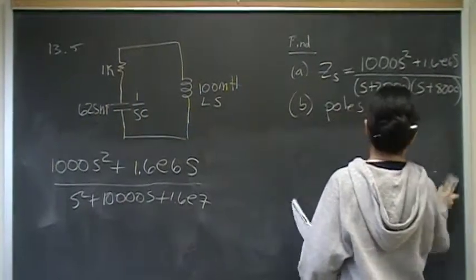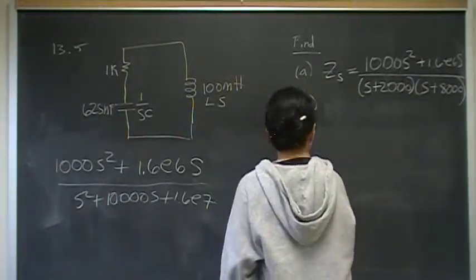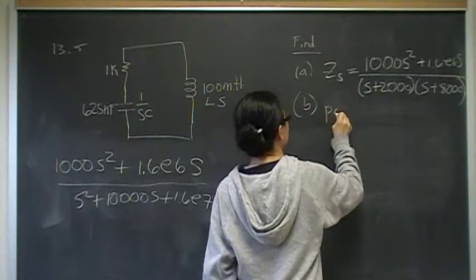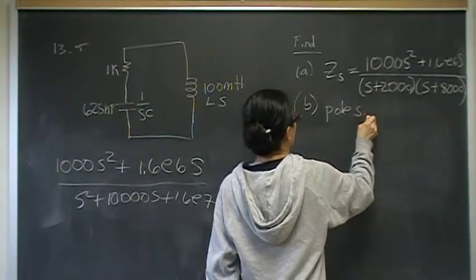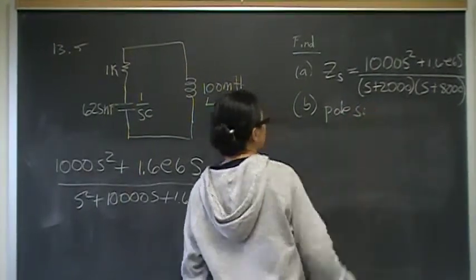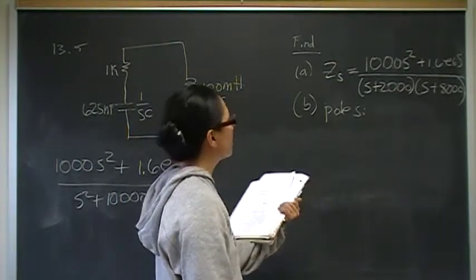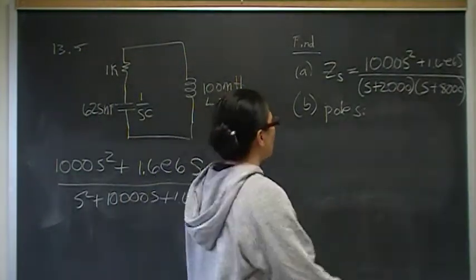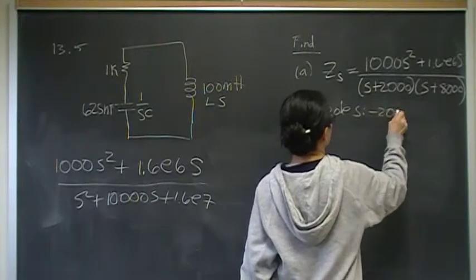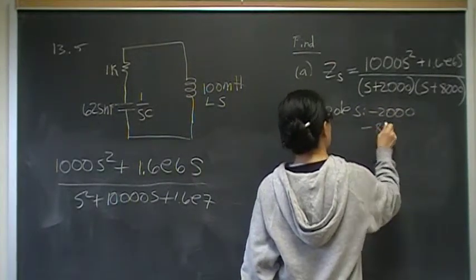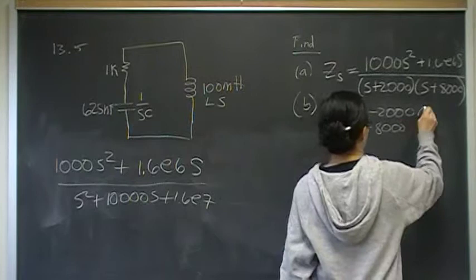Poles are where we have problems in the denominator, and that's going to be at negative 2,000 and negative 8,000. So, we have a pole at negative 2,000 and negative 8,000, and the units are radians per second.